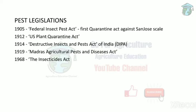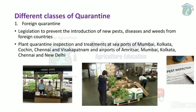There are two classes of quarantine: foreign quarantine and domestic quarantine. Foreign quarantine refers to the rules to prevent the introduction of new pests or diseases from foreign countries. We have laws and rules so that we can stop pest introduction, and if pests are introduced, we quarantine them.